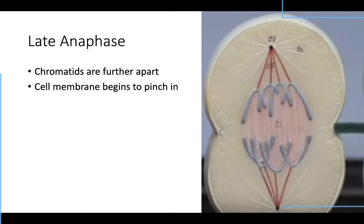In late anaphase, the chromatids are pulled further apart, getting closer to the centrioles, and they'll continue to be pulled until they go all the way to the other side. Now we also see the cell membrane starting to pinch in a little bit, which tells us it's getting ready for the next phase. That's late anaphase.